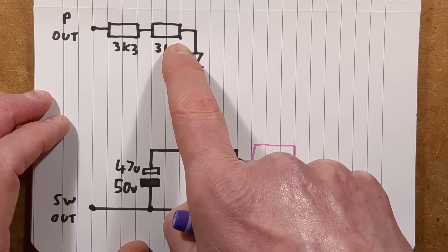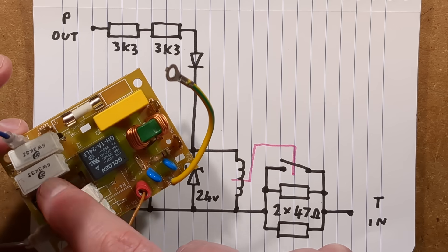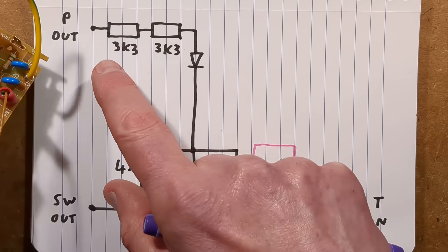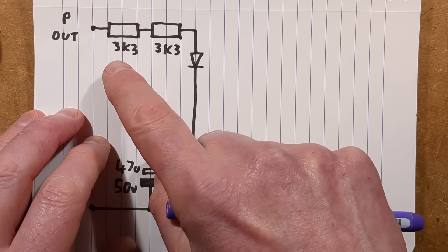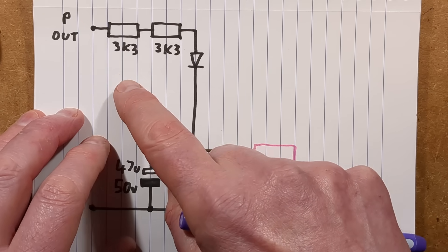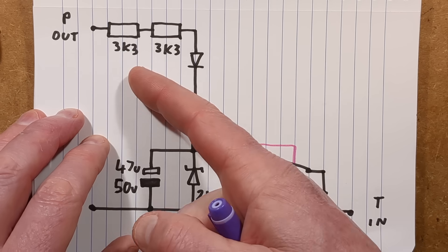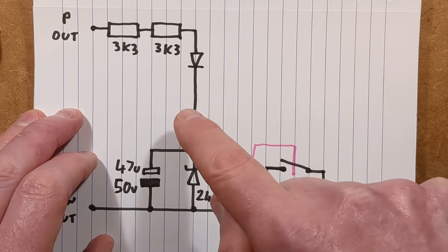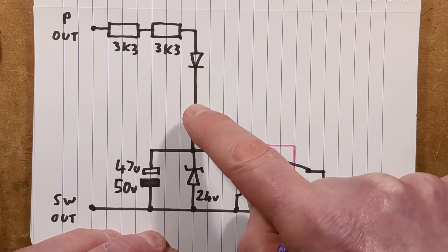To give that time delay, there's two 3.3k resistors and they are quite high power resistors because they are passing enough current to power this relay. Although they remain powered while the unit's running, the power dissipation I worked out is roughly just under half a watt and they are rated five watts each, so they're generously rated for that.